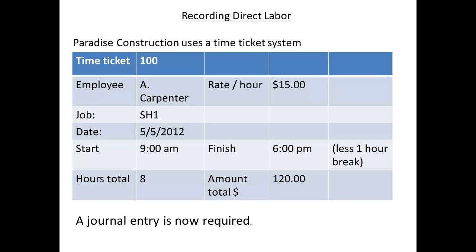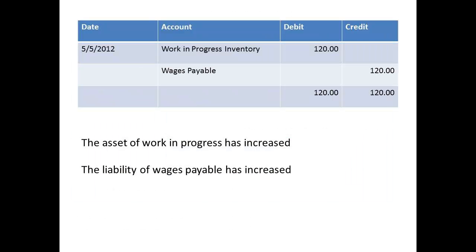The card shows the employee name, the rate of pay, the job number, hours worked, and the total to be charged to the job. The journal entry shows how the information is then entered to the accounts. Work in progress has been debited with $120, since the asset of work in progress has increased. The liability of wages payable has been credited with $120, since this liability has increased.